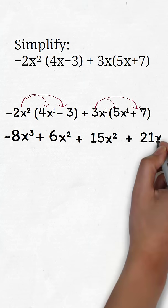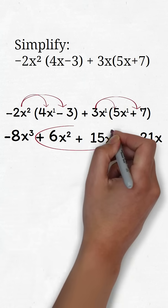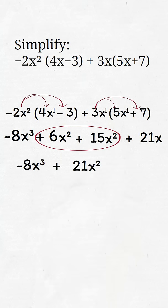3x times 7 is 21x. Now we add like terms, 6x squared plus 15x squared. This is 21x squared. So we have negative 8x exponent 3 plus 21x squared plus 21x.